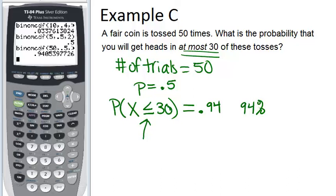Which by the way means there is only a 6% chance that we will have more than 30 heads in our 50 coin tosses.